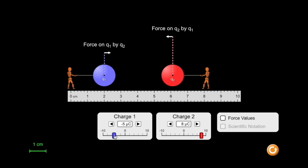You can change the sign on the charge by moving the slider to the right or left side of the zero mark on the slider.